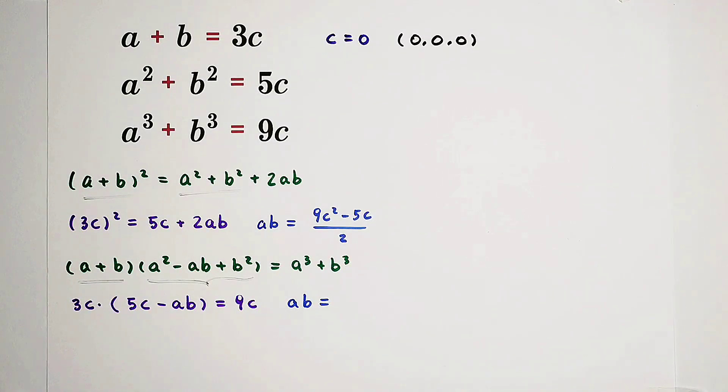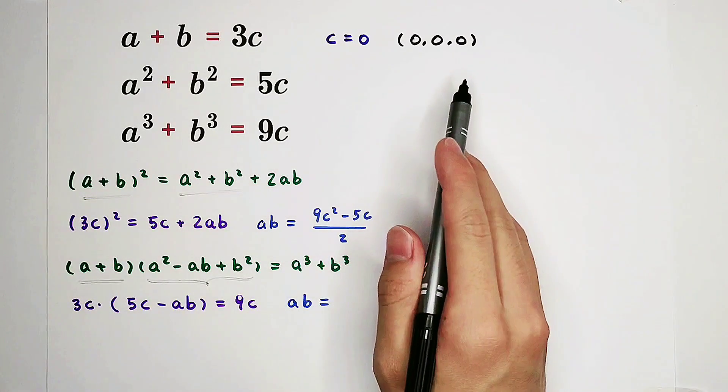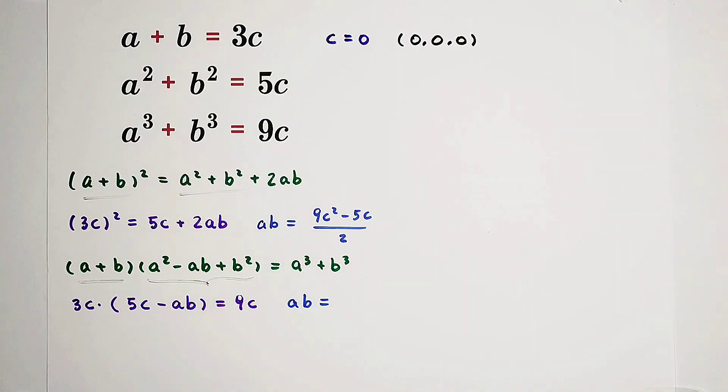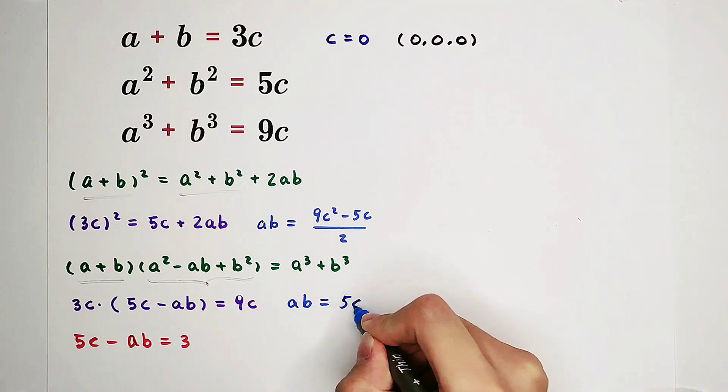So now, don't worry. Because we've concluded this one, this case. Now, we only have to care about the case that c does not equal to 0. In this case, of course, we're allowed to divide both sides by 3c. So a times b equals 5c minus 3.